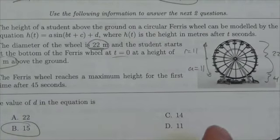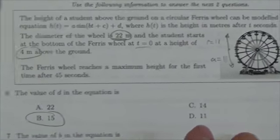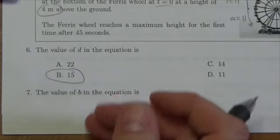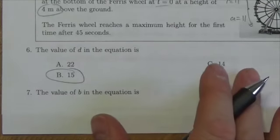It says the Ferris wheel reaches maximum height for the first time after 45 seconds. Now, the value of b in this equation is - I apologize that this runs over to the next page here, but actually this gives us an opportunity.